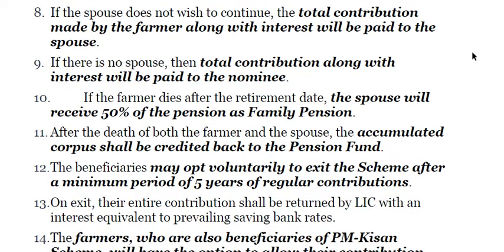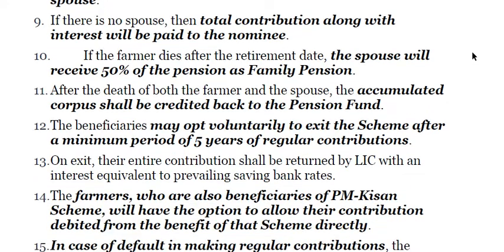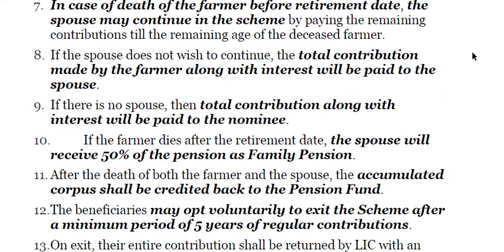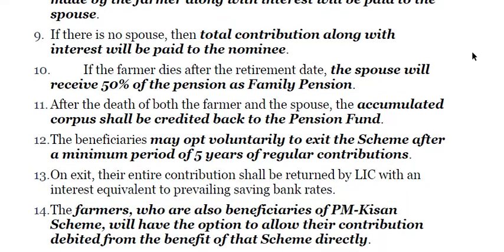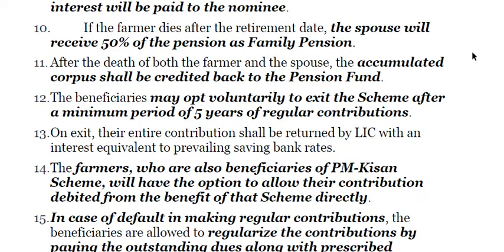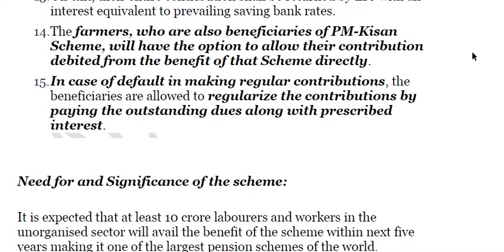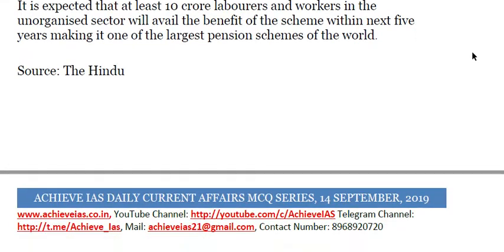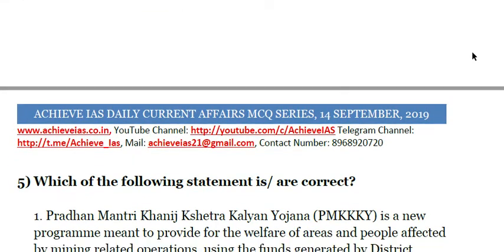A correction: it is not just available to small and marginal farmers — rather it is available to almost all farmers between the age group of 18 to 40 years. Farmers below 18 years of age or above 40 years of age cannot avail themselves of this benefit. So it is not the case that it is only available to small and marginal farmers. Apologies for the incorrect statement given earlier.